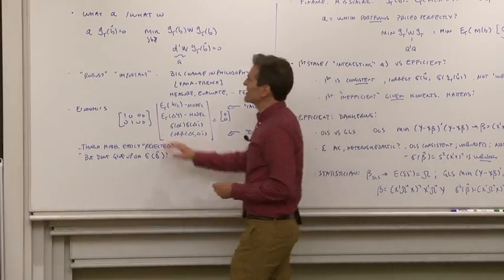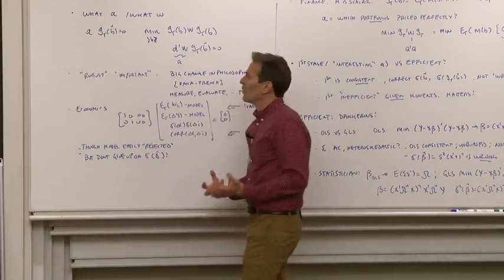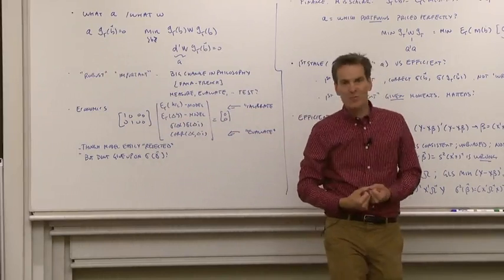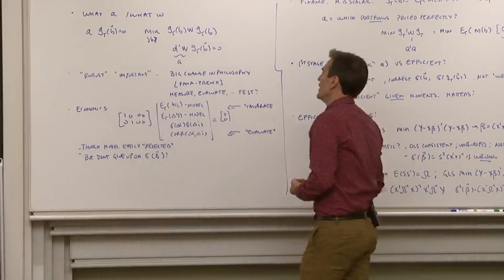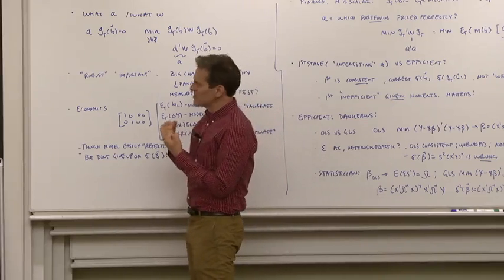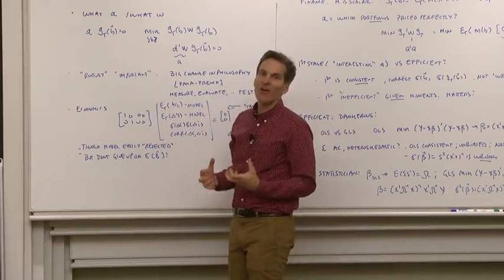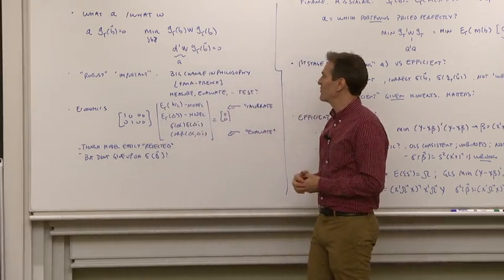One way to do it is to think about what you're doing. Which moments are robust? Which moments are important? Which moments do you think the model is a good parable for as opposed to a bad parable for?